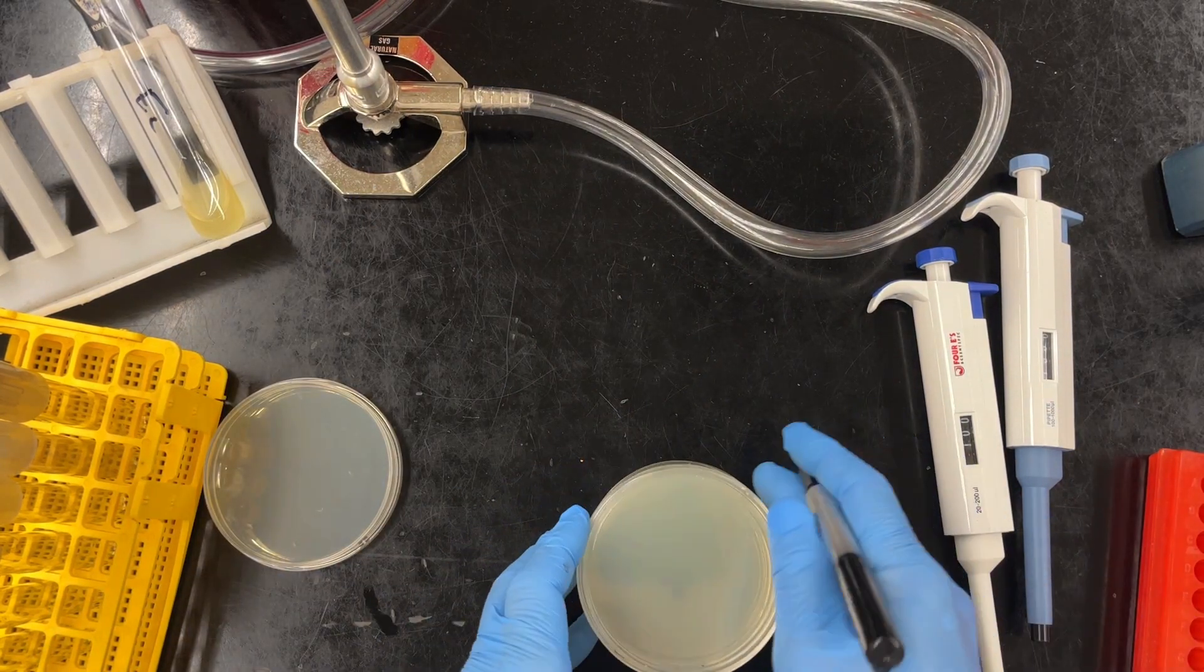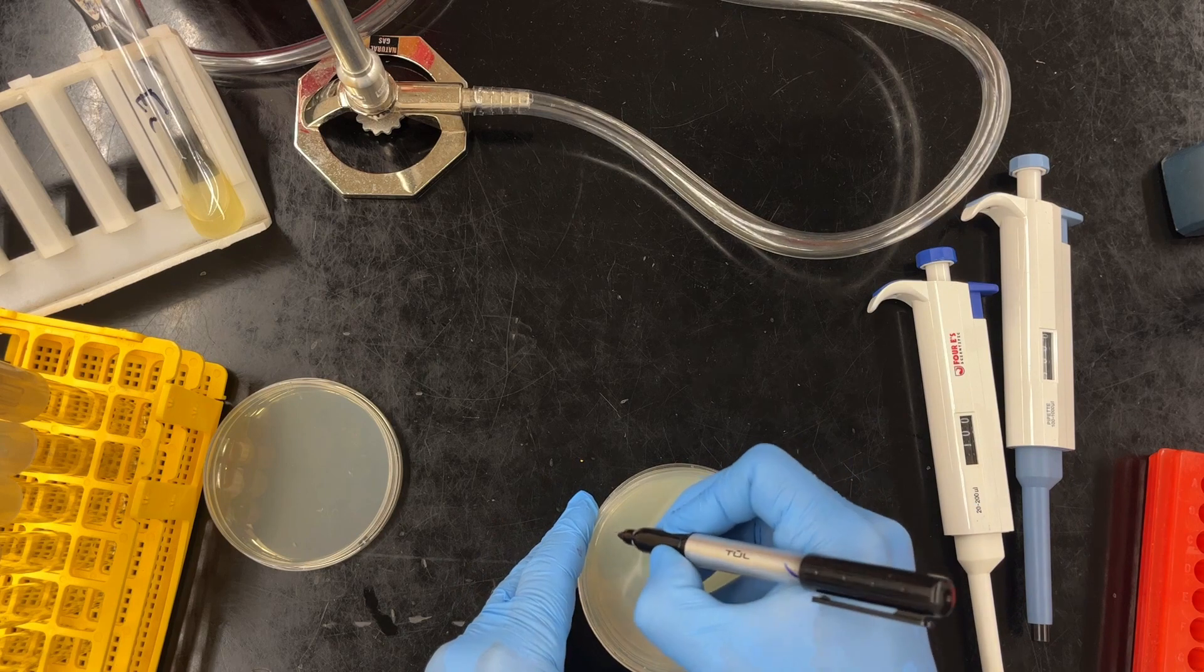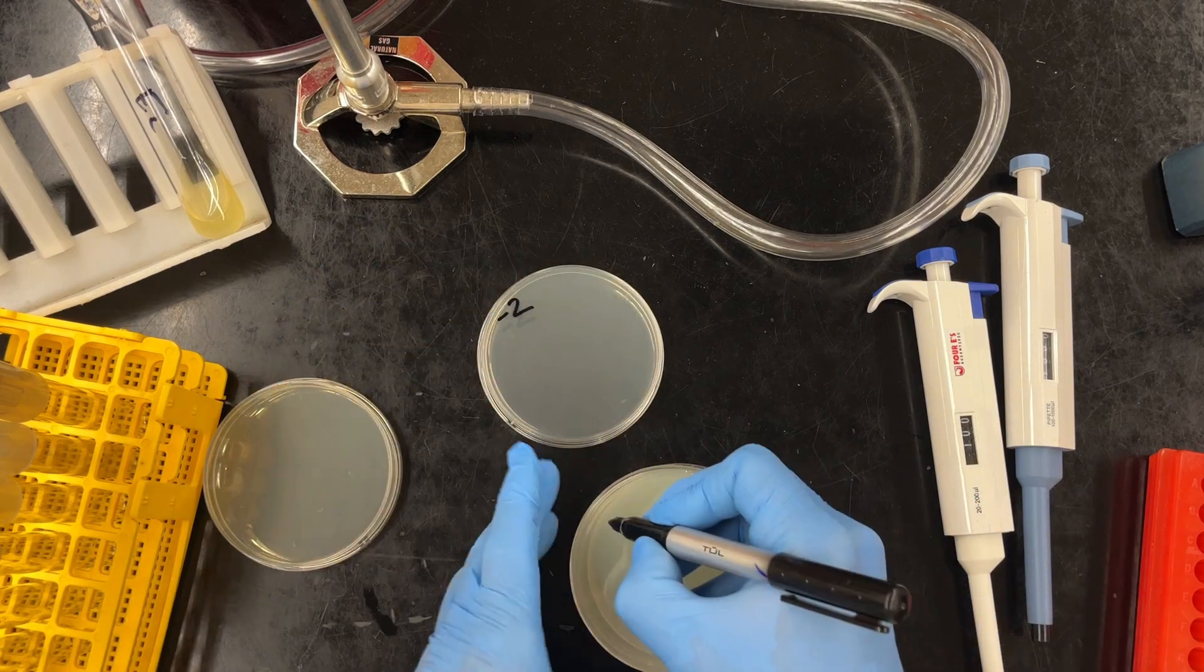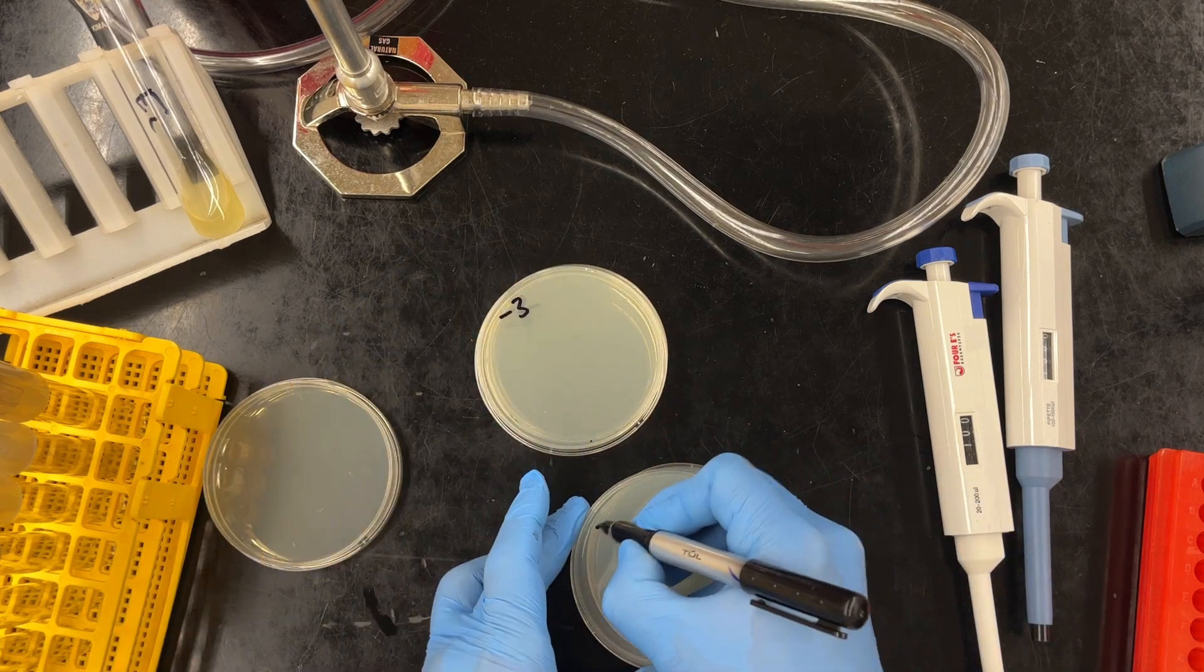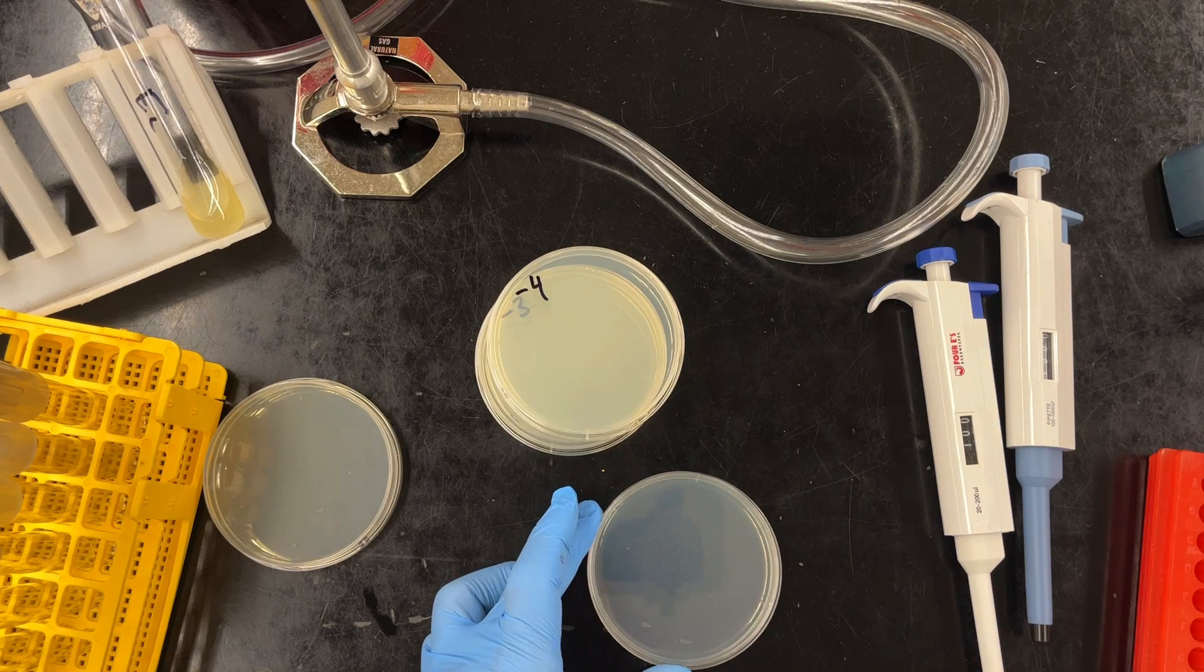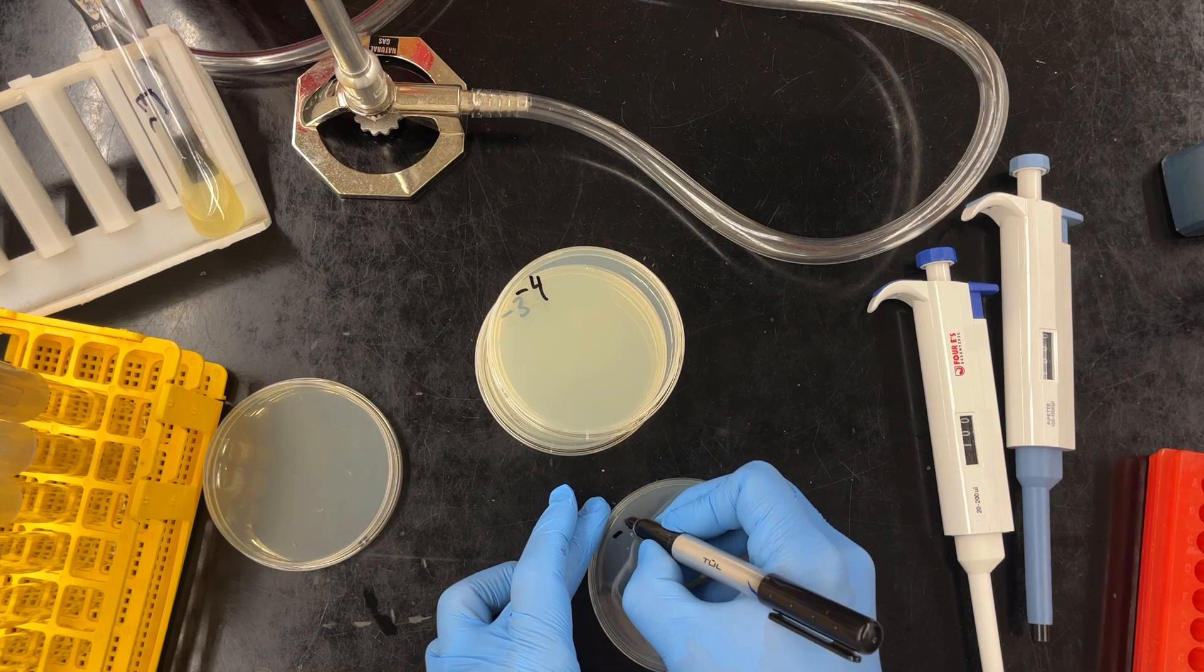Now in the past, when we did standard plate counts, we labeled our plates with the dilution that the samples were coming from. But in this case, what we're going to do is we are going to label with the final dilution. And we'll go over the math in class. And so in this case we're going to plate minus two, minus three, minus four, and minus five.